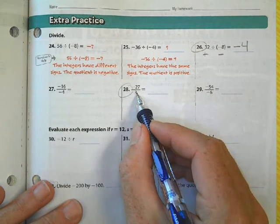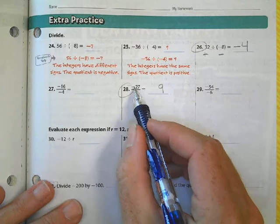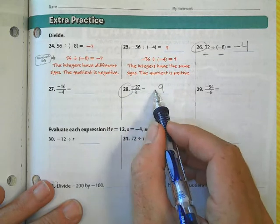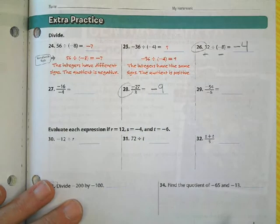27 divided by 3 is 9. But again, I have a negative divided by a positive. The signs are different, so I end up with a negative answer.